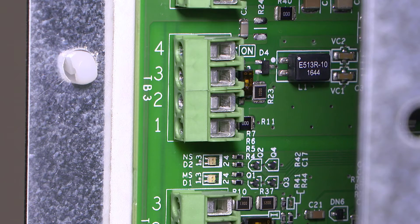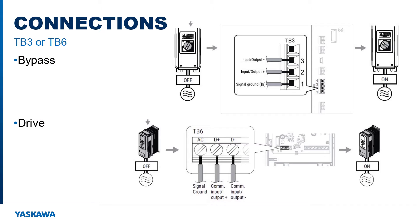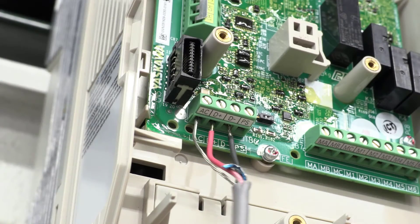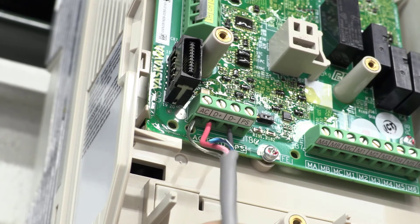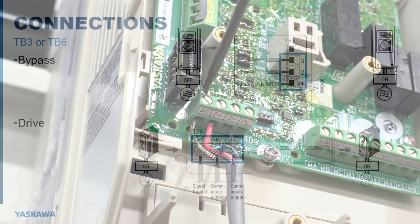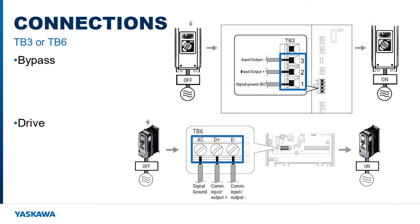Connect the signal ground and communication input/output plus and input/output minus. This is important — double check the wiring and compare it to the diagram given in the quick start procedure.